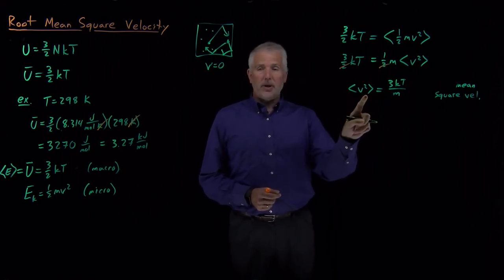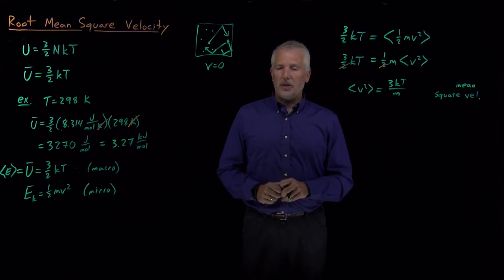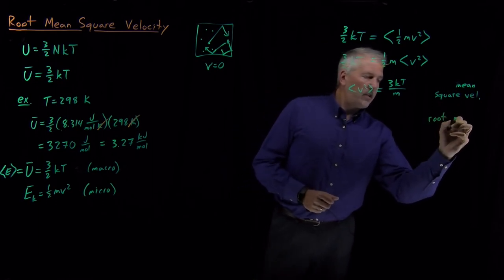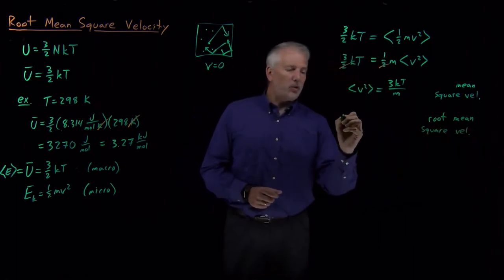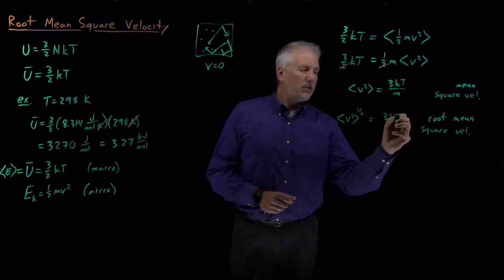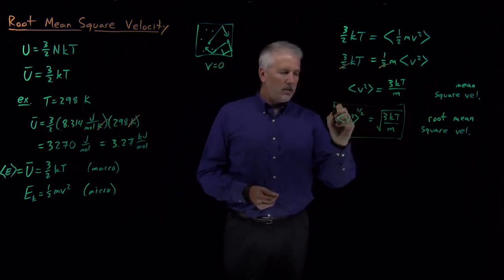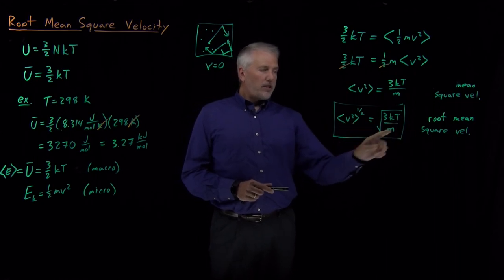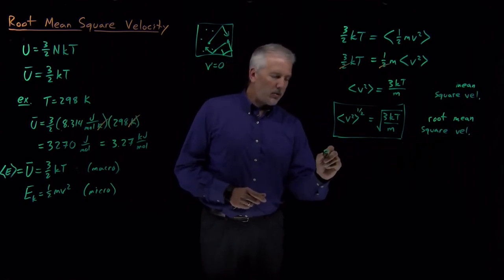That quantity has units of velocity squared, which is not very intuitive. So we define the root mean square velocity of a gas: if I take the square root of both sides, the root mean square velocity v_rms equals the square root of 3kT/m. Let's put that expression in a box, because it's one we can use fairly commonly. If I want the root mean square velocity — the square root of the mean of the squares of the individual molecular velocities — I can use this expression.